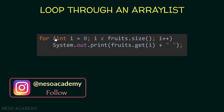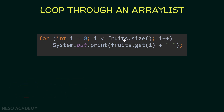To loop over an ArrayList, all we have to do is use a for loop. We start from i equals zero, and loop as long as i is less than the size of the ArrayList. I'm using the fruits ArrayList from the previous video, getting its size using the size method, then i++. Inside the loop, I'm using the print method and printing the element at index i using the get method, passing i as an argument.